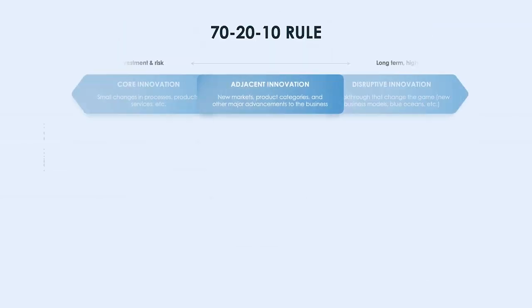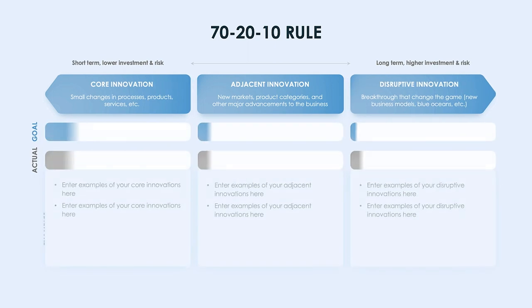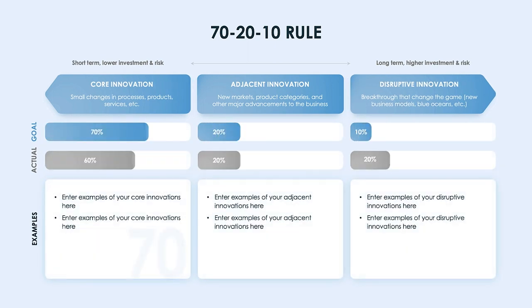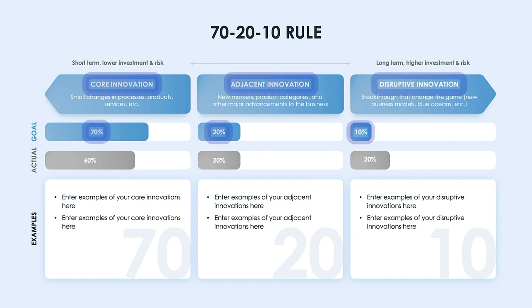So how do you know how much to invest in each category? Use the 70-20-10 rule. A safe allocation dedicates 70% of resources to core technologies, 20% to adjacent, and 10% to transformational innovation to test the waters.